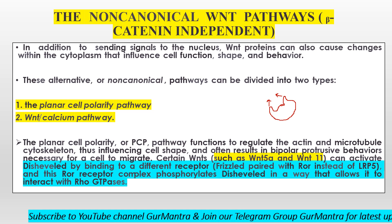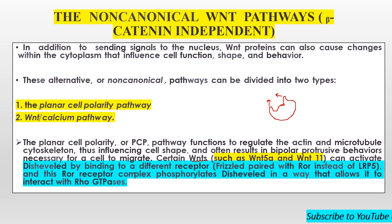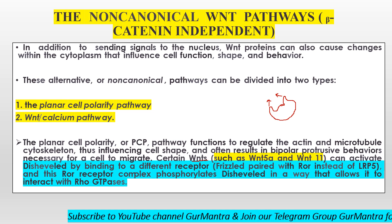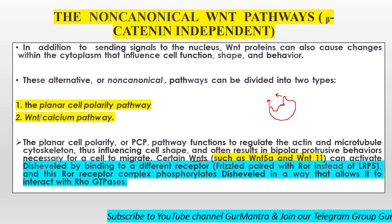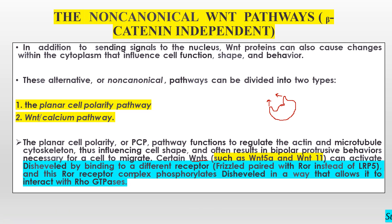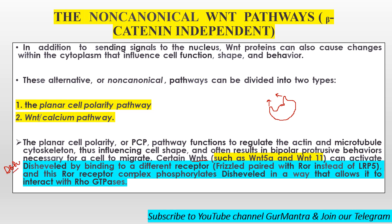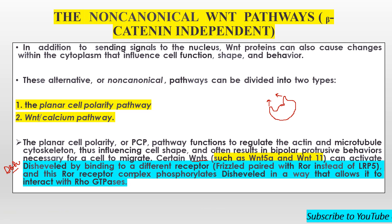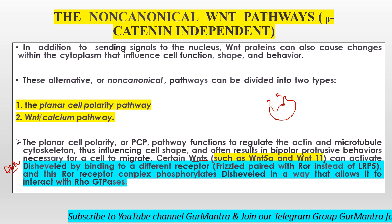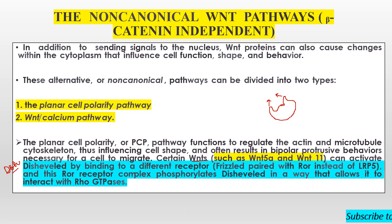Some WNTs play important roles here — you need to remember their names, because in developmental biology signaling, remembering the names of factors is very important. WNT5A and WNT11 play important roles here. What do they do? They activate a protein called Dishevelled (DSHB). We already mentioned this in the canonical pathway as well. Here they bind by a different receptor — the ROR receptor — unlike canonical where we talked about LRP5. Here we are talking about the ROR receptor, with which Frizzled is also associated.